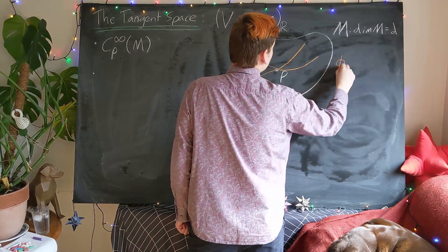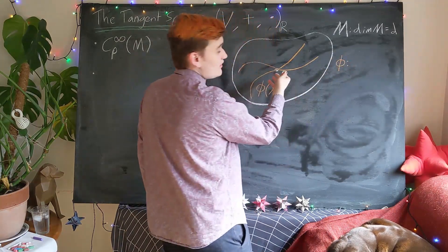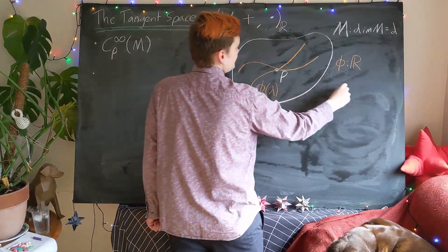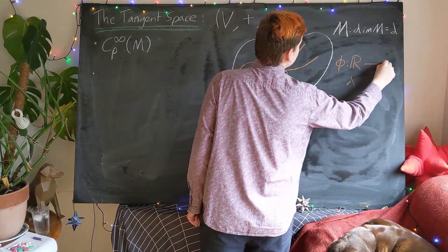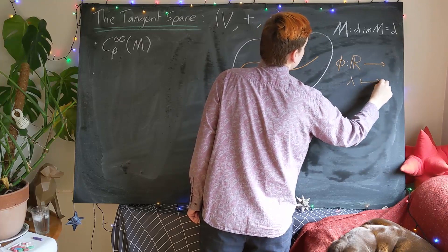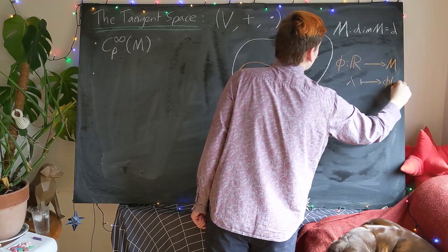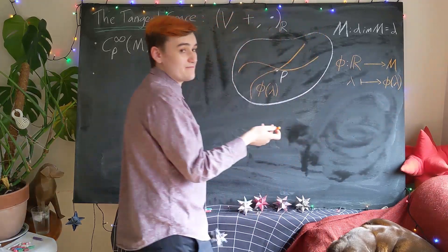So this phi, which is the curve, is a map from the real numbers. So this just takes a lambda value and maps you to the manifold. And essentially here it's just mapping to the image of the curve in the manifold.